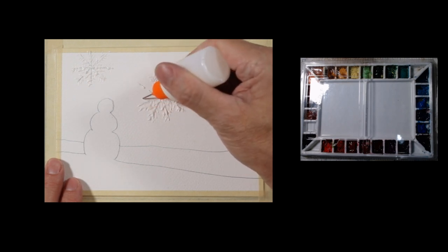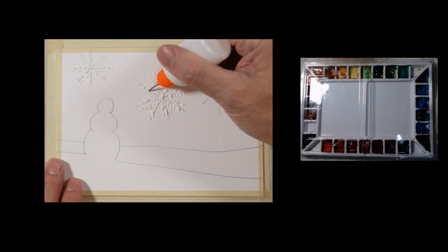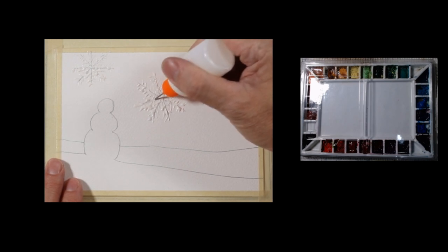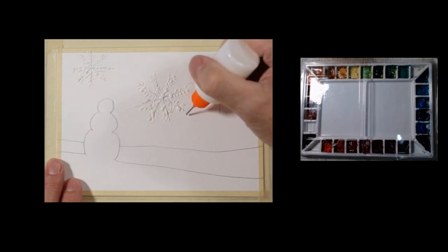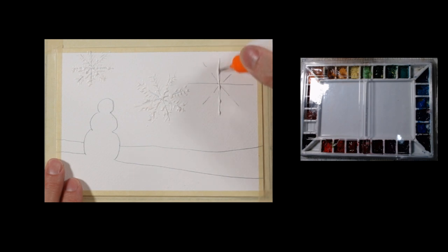When you're using one of these masking fluid pens, I've filled mine on my own, but you can get them pre-filled. You also want to make sure you cap it as soon as you're ready to stop to keep them from clogging. Just light pressure and let the fluid come out, just like you're writing with a roller pad. Just very simple. So, this is going to give me my large snowflakes.